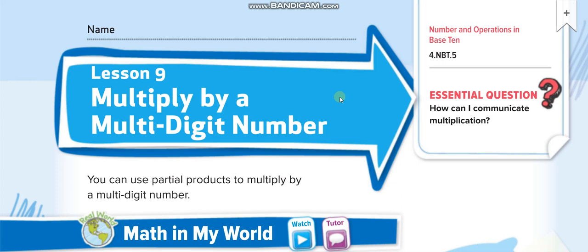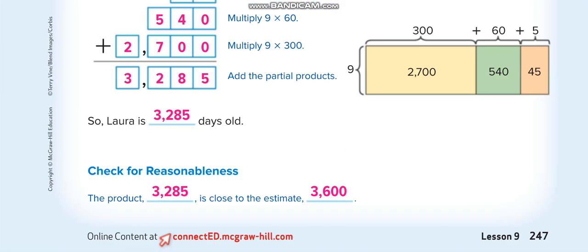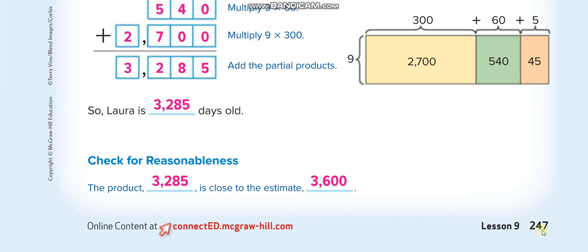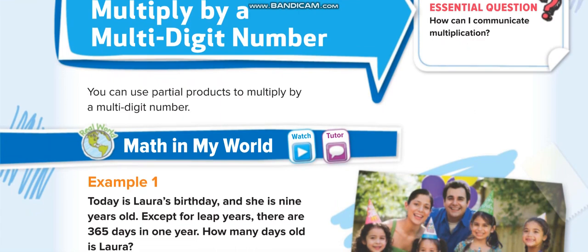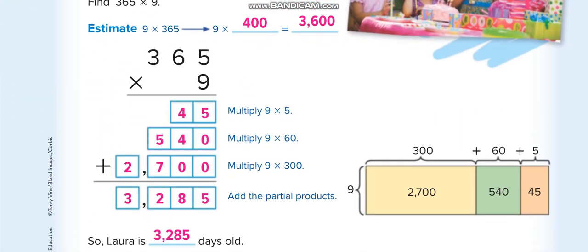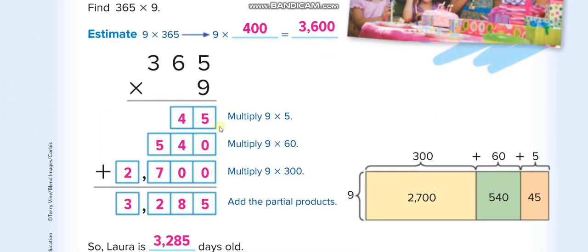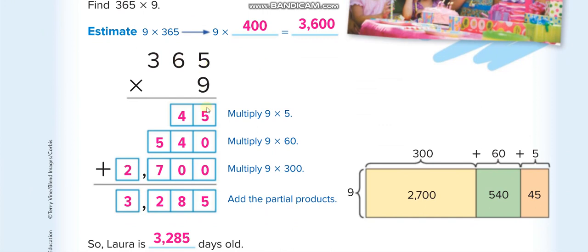Hey everyone, welcome back to my channel, Learn Math with Mr. Saad. Today's lesson for grade 4, chapter 4, lesson 9: multiply by a multi-digit number. Page number is 247. In this lesson, we'll multiply by a multi-digit number. First of all, the first example here: 365 times 9.